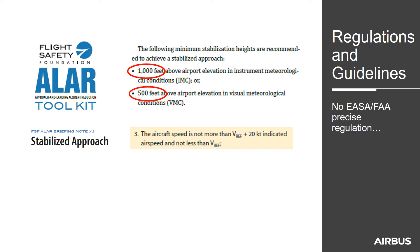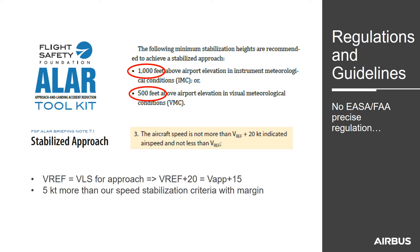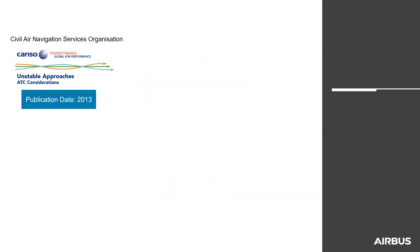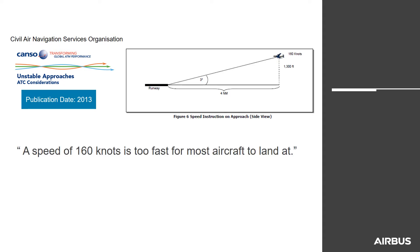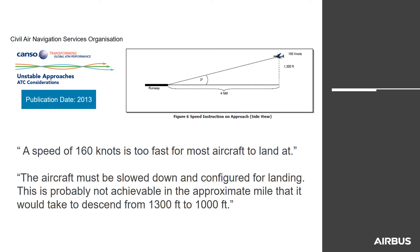There is also a note that speed should not be more than VREF plus 20. For an Airbus aircraft, VREF is equal to VLS for approach. VREF plus 20 gives an approach speed of VPP plus 15, which is just 5 knots above the criteria to trigger the speed callout. Additionally, we contacted Civil Air Navigation Services, who confirmed that 160 knots is too fast for most aircraft to land at, and that reducing speed from 1300 feet to 1000 feet could be difficult.